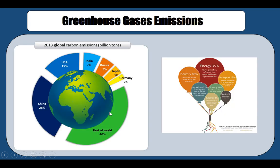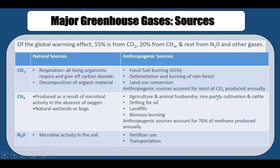Which countries produce more greenhouse gases? For a very long time, it has always been the United States of America that produced the most, at about one third of global emissions. Over the last 15 to 20 years, China has progressed tremendously due to industrialization, and for roughly the last six to eight years, China has overtaken the US and now produces almost one third of global greenhouse gas emissions, with the US now in second place.